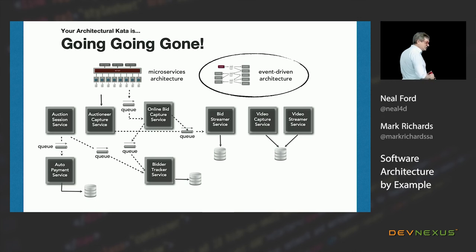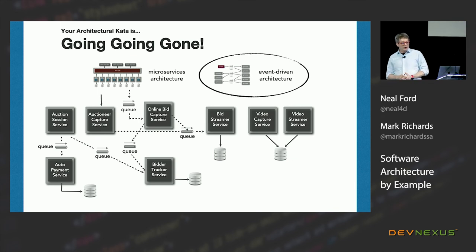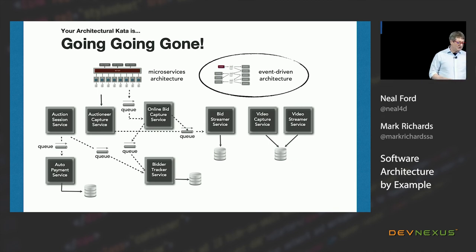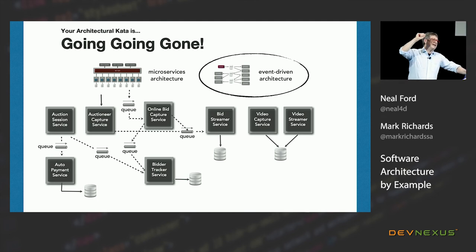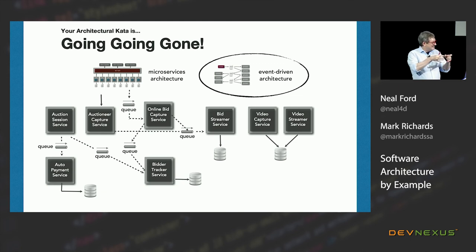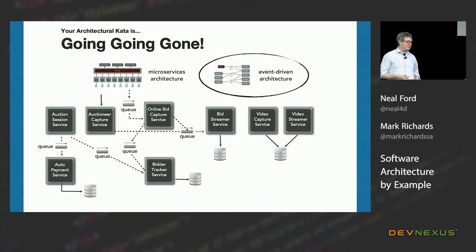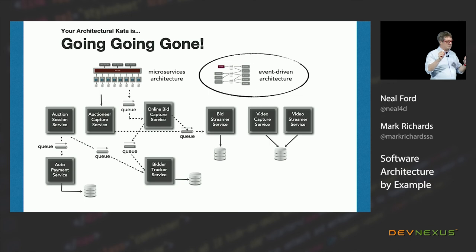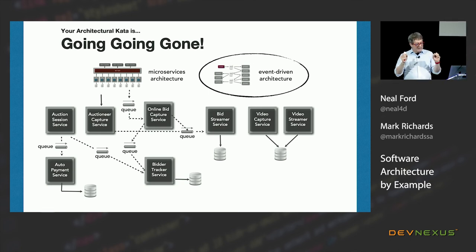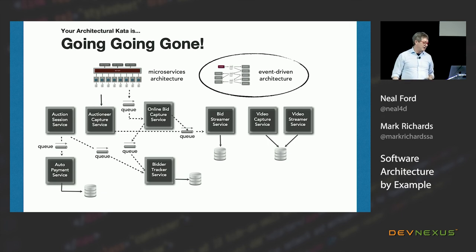The next thing from here is to look at transactionality — are there any transactions that need to span across service boundaries? If there are, you may need to revisit. In the software architecture Hard Parts book we go further and define what we call integrators and disintegrators for microservice architectures. Disintegrators encourage you to break things down into smaller pieces; integrators encourage you to bundle them back together. Transactionality is one of those integrators — if you break things down too small and create headaches from distributed transactions, use that integrator to bundle it back together.